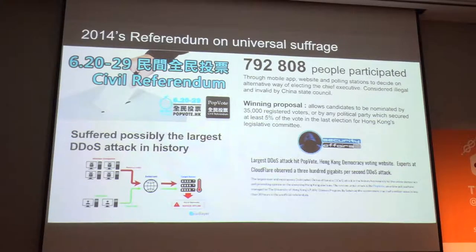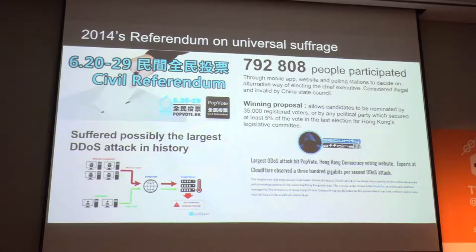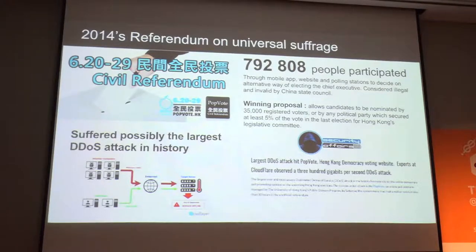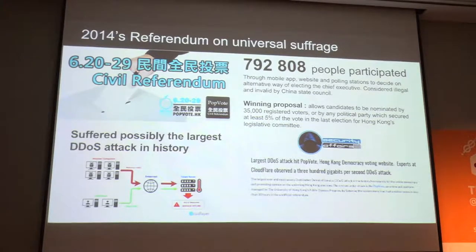Participation in that referendum was quite insane — almost 800,000 people participated, which is like almost one-fourth of the registered voters in Hong Kong. The referendum was about finding a new way to elect the chief executive democratically. The proposals were generated by local parties and civil society, and the winning proposal was that to elect the chief executive you need at least 35,000 registered voters — 1% of the voting population — or parties can choose a nominee if they have 5% of the votes in the past legislative election.